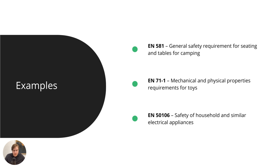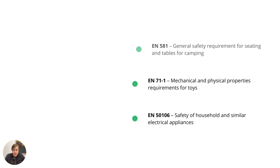EN 71-1 gives you specific design inputs that the Toy Safety Directive wouldn't necessarily provide on its own. Finally, EN 50106 covers safety of household and similar electrical appliances. I picked these three just to demonstrate that EN standards exist for essentially all sorts of products — furniture, toys, electronics. If you're selling, importing, or manufacturing in the EU, you need to be concerned with the EN standards that apply to your product.